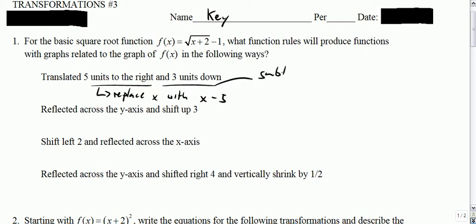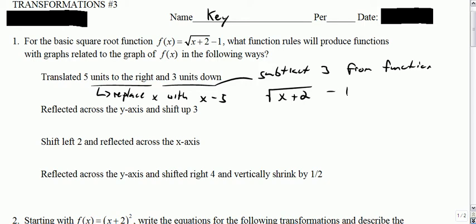Three units down is like subtracting three from the function. Let's recopy what the original function is: square root of x plus two, minus one. So the first thing was replace x with x minus five. I'm just going to erase the x and put in x minus five. And then subtract three from the function — take what you have there and minus three from the end. So if you simplify that, you've got the square root of x minus three, and then minus four.